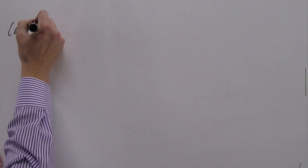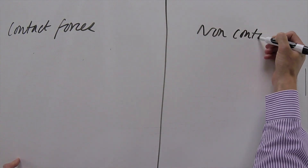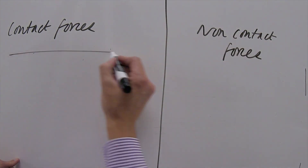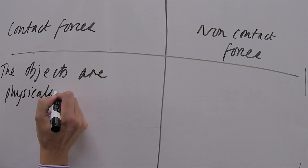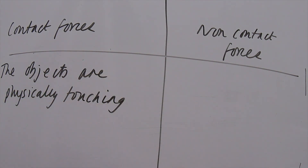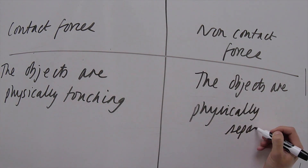There are two types of force that we need to know about: contact forces and non-contact forces. With contact forces, the two objects have to be physically touching. With non-contact forces, the forces can be exerted between those two objects without physical contact. We just need to know a couple of examples of each.